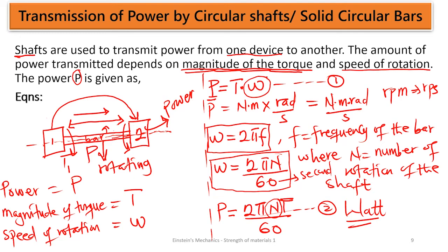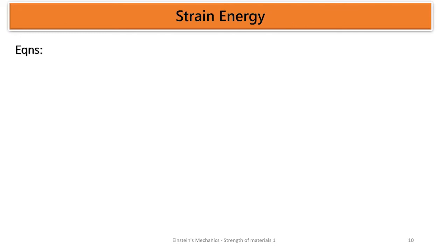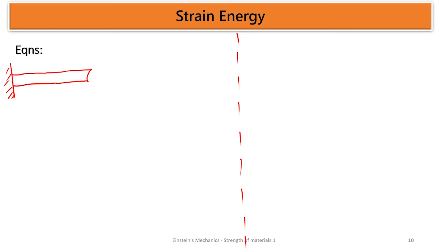Now let's look at strain energy. As the bar is being strained, there is what we call strain energy. We are going to derive an equation for strain energy from first principles. Consider a circular bar fixed at one end. When we apply a torque T to it, this bar is going to rotate at an angle theta.